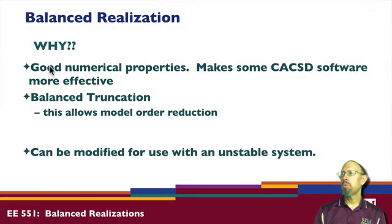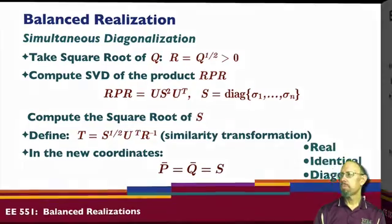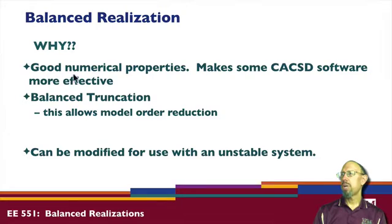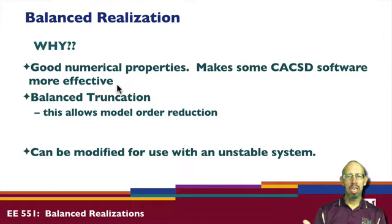So why would we do this? First, there are good numerical properties associated with this process — we work only with positive definite matrices and orthogonal matrices throughout. Because of that, it makes computer aided control system design software more effective at computing things like transfer functions, eigenvalues, and many other quantities.